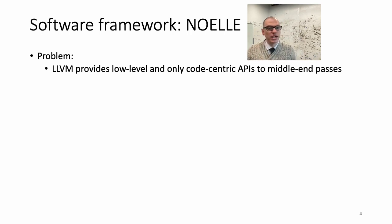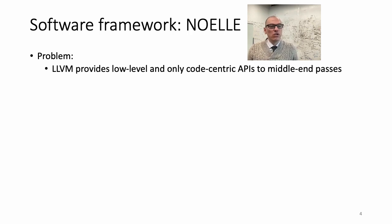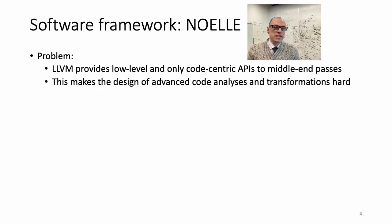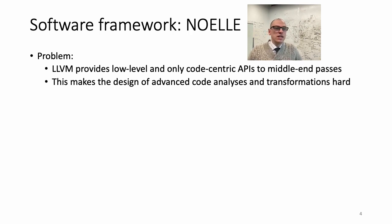LLVM is a fantastic infrastructure — I really love working inside LLVM and extending it. It's very good at many things. However, if you want to do research in code analysis and transformation, you're probably familiar with the LLVM IR and the LLVM API you can rely on. The problem with these APIs and abstractions provided by LLVM is that they are fairly low-level and only code-centric. Code-centric means the code is first-class citizen — you have the concept of instruction, basic block, function, loop — it's all about code, which is great for many things, but it's not enough.